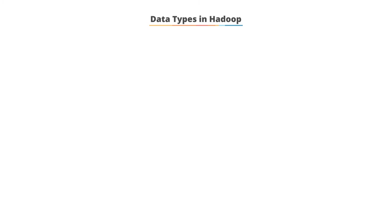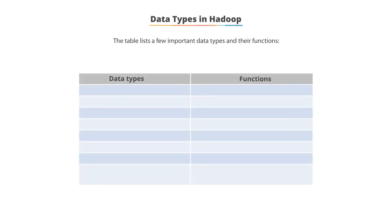The first data type in Hadoop is Text. The function of this data type is to store string data. The IntWritable data type stores integer data.